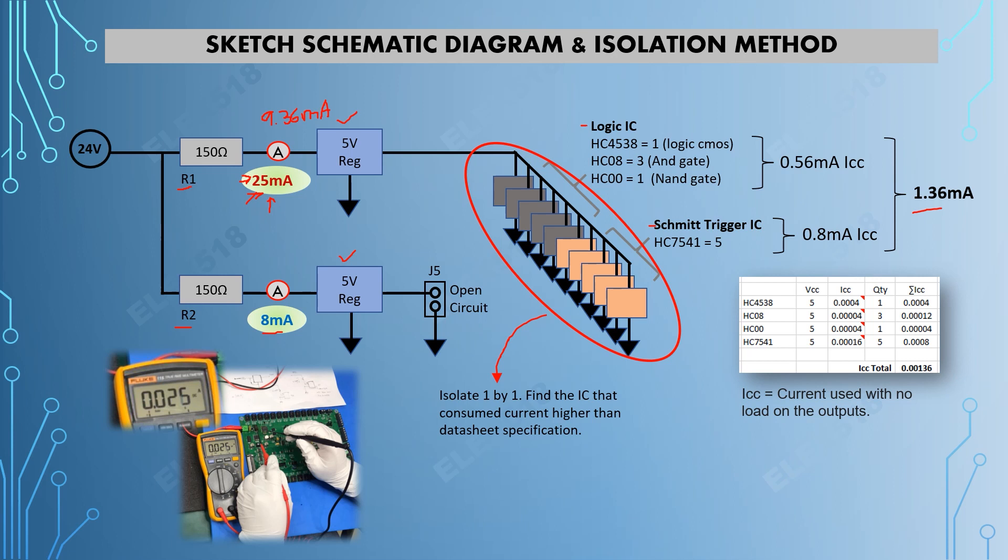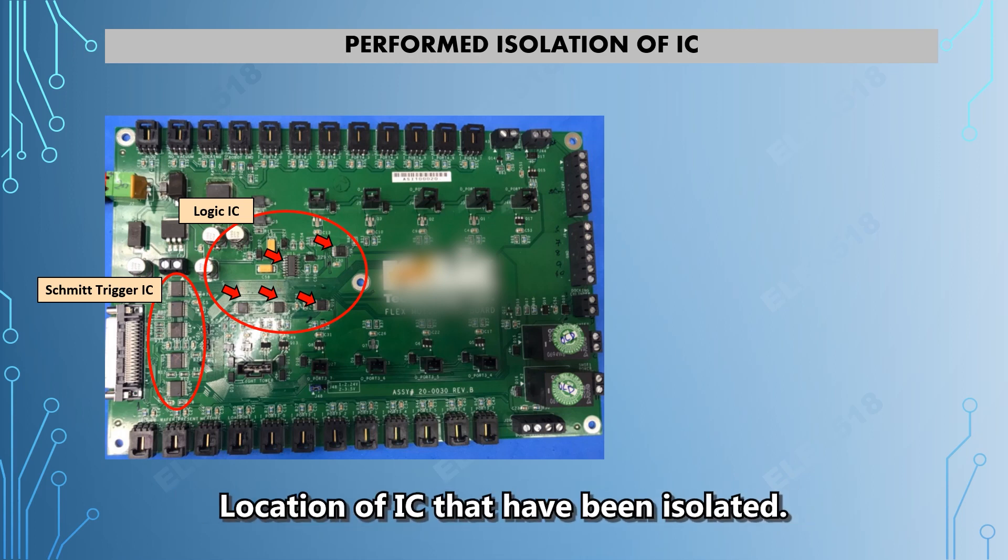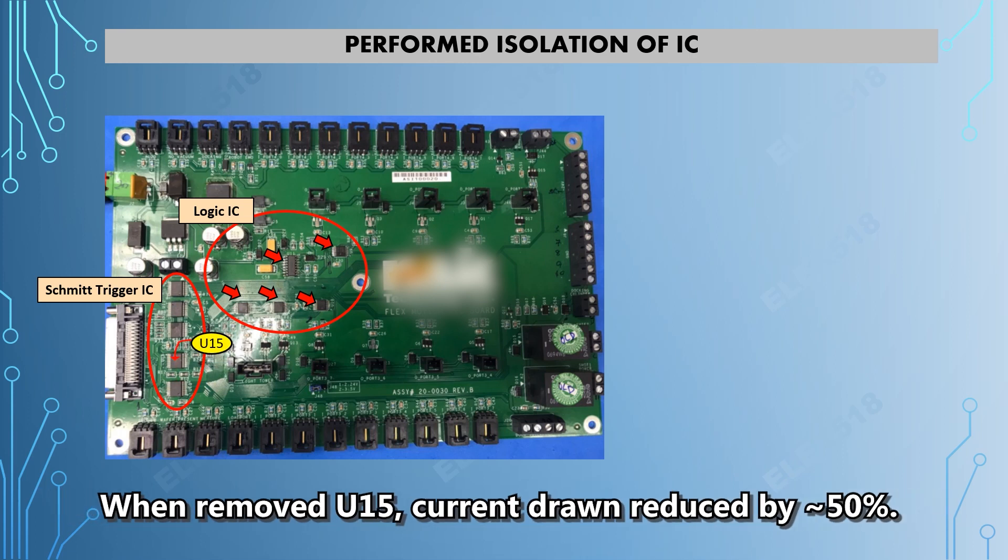Let's move to the next step. In this step, I am showing you the location of the ICs that I isolated: the five logic ICs and the five Schmitt trigger ICs.